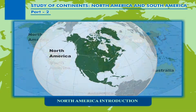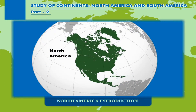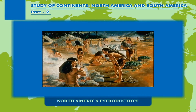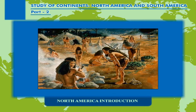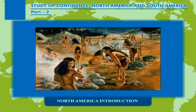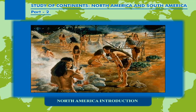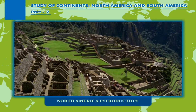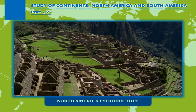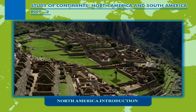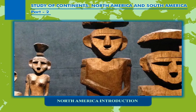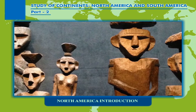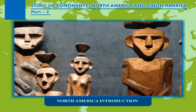North America was reached by its first human populations during the last glacial period via crossing the Bering Land Bridge. The so-called Paleo-Indian period is taken to have lasted until about 10,000 years ago. The pre-Columbian era ended with the arrival of European settlers during the Age of Discovery and the Early Modern period.